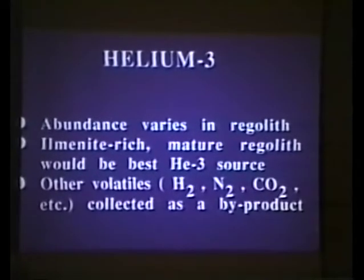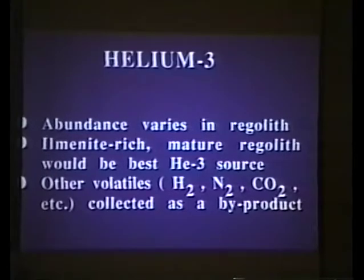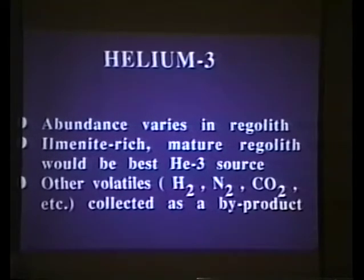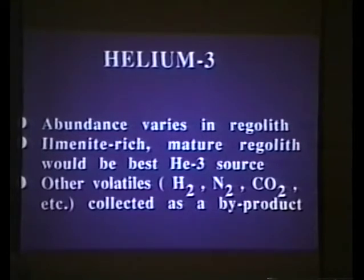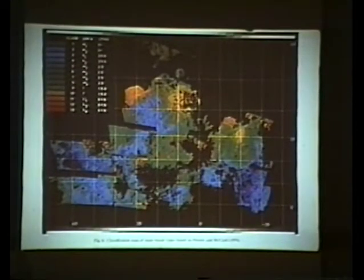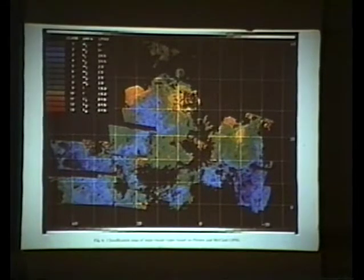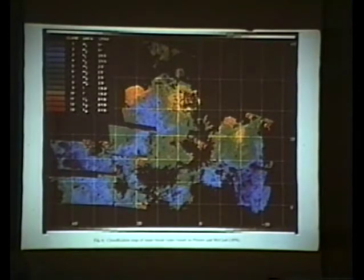Helium-3 is implanted in the lunar soil — the lunar regolith — by the solar wind. Its abundance varies in the regolith, and ilmenite-rich, mature regolith is determined to be the best source of helium-3. If you go to the trouble of getting helium-3 out of the lunar soil, you also get the other solar wind gases — hydrogen — which would be very useful in lunar base development. The common theme for both oxygen and helium-3 is the mineral ilmenite. Some workers have started looking for volcanic rocks on the moon that are rich in ilmenite, and this map shows the darkest-blue mare flows with the highest ilmenite abundance.